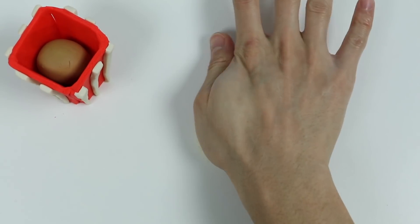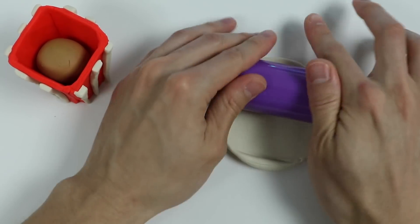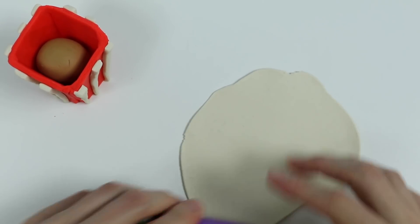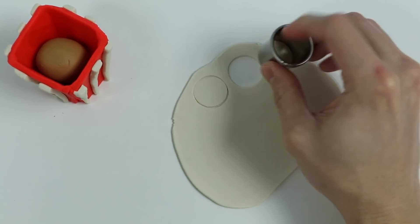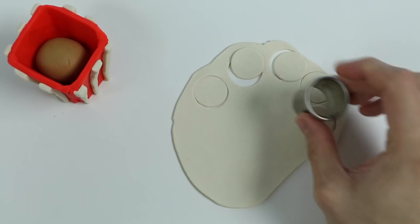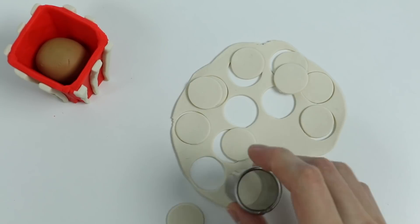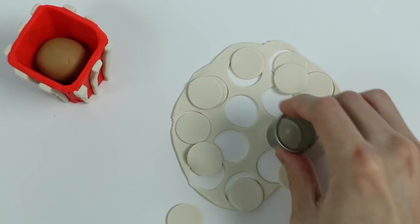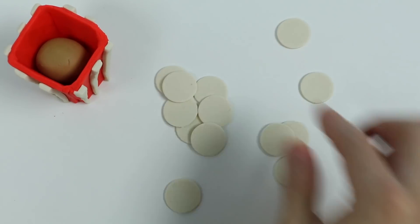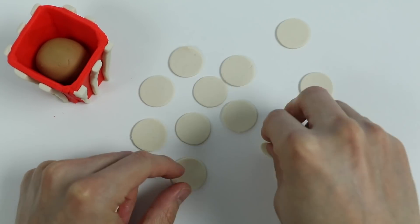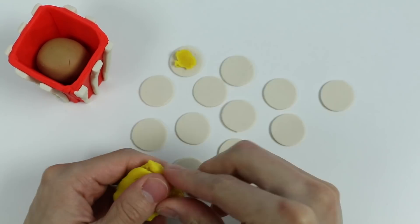Now that we made our bucket, it's time to make our popcorn. Let's roll out some white Play-Doh. Now let's use this circle cutter. Alright, let's put yellow Play-Doh on top of each circle. This will be the butter.